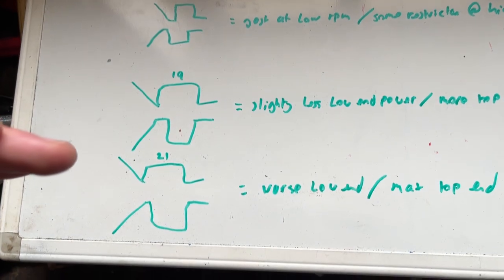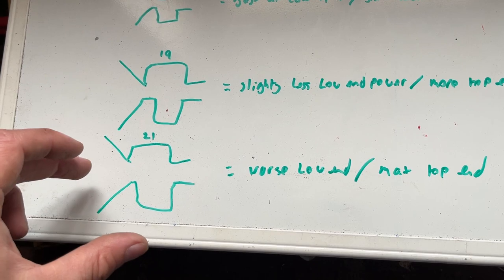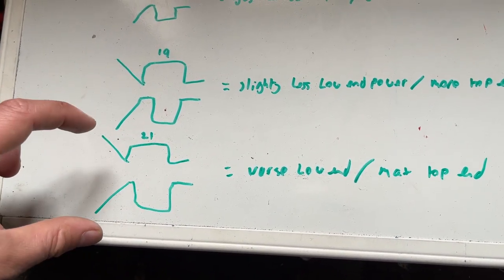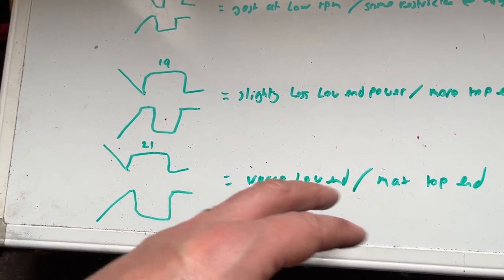So then if we go to our 21mm carburetor, this is getting to the point where I personally think it's too big, especially for road use for 50 to 70cc. At this point, you've got a massive opening. So at high RPMs, you're getting the maximum airflow through.